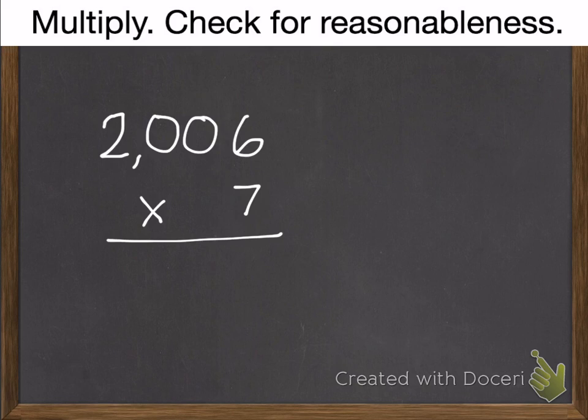We can do just one more example that's in the thousands. If I have 2,006 times 7, I'm going to start with my ones. 7 times 6 is 42.